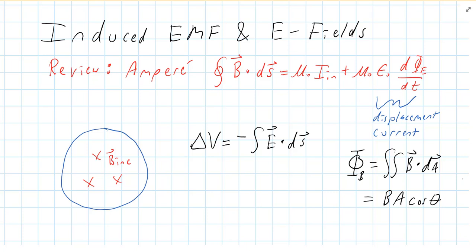Hey everybody. I've got to talk about induced EMF and electric fields. If you would take a moment and pause the video and copy down the stuff that's here — we have a review of Ampere's law. I've got the situation: a circular conductor, a wire bent in a circle, with a magnetic field pointing into the page that's increasing. I've got the relationship between voltage and electric field: change in voltage is negative E dot dS. And the definition of magnetic flux — the version we'll use is B times A cosine theta, but theta is zero degrees here, so the cosine theta drops out.